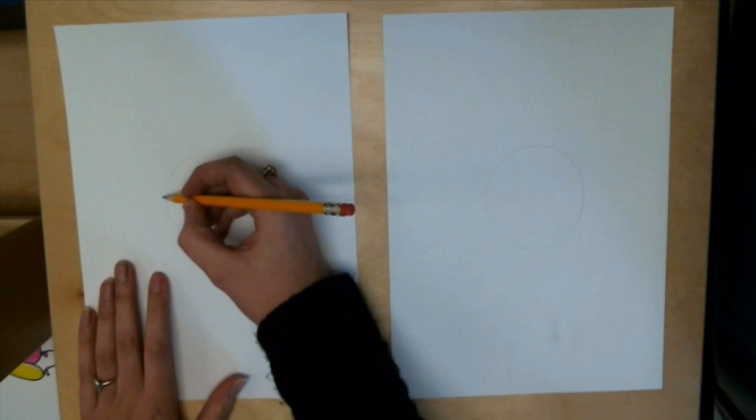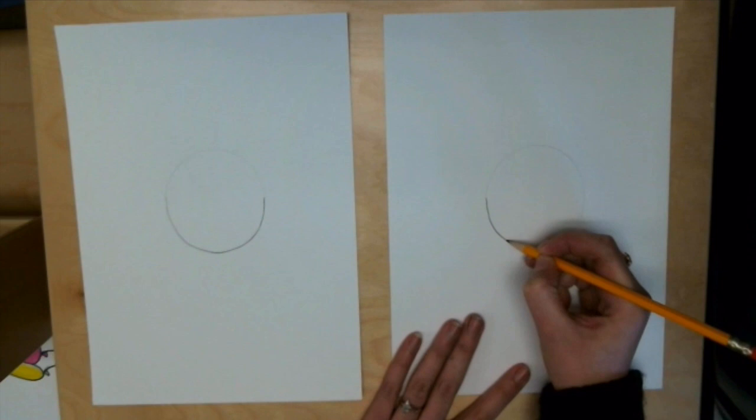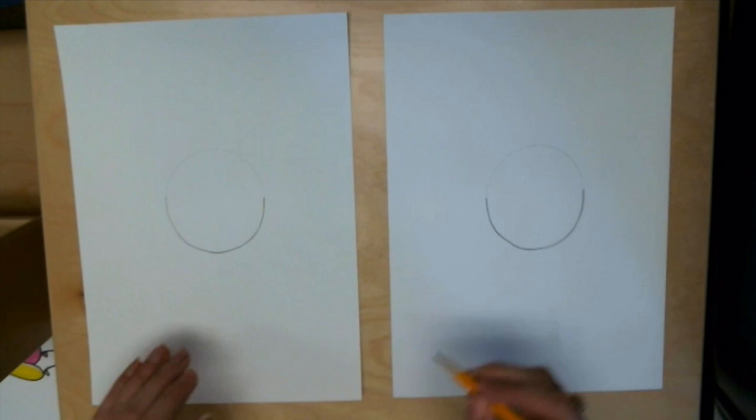Then I am going to follow that line for the bottom half of the circle. Only the bottom half for now. You can see I'm pushing a little bit harder on my pencil and going nice and slow and steady so I stick right to that line the best that I can.